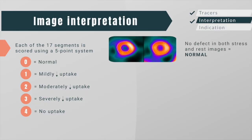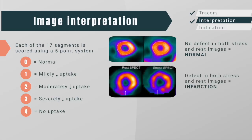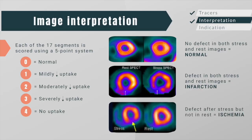If there is no defect in both stress and rest images, it indicates normal myocardium. A defect present in both rest and stress images usually indicates infarction, whereas a perfusion defect seen after stress but not on rest images indicates myocardial ischemia.